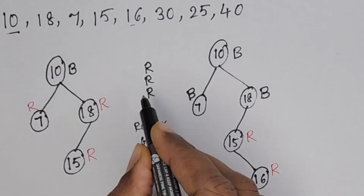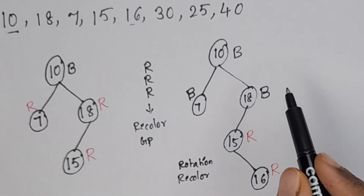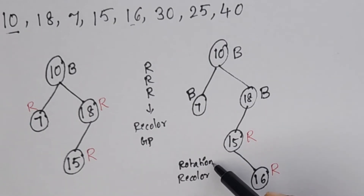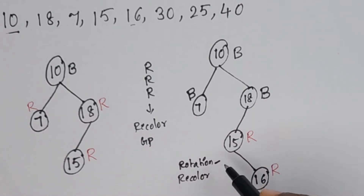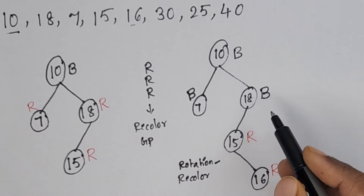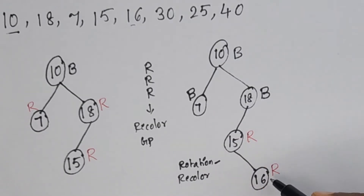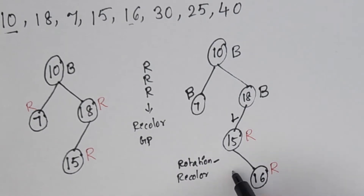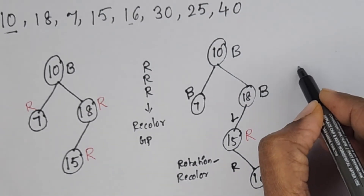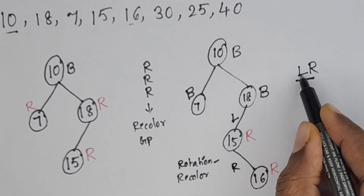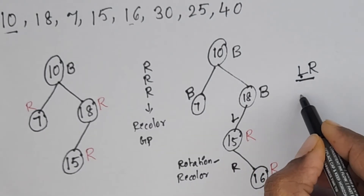From the new node to its grandparent, we check the direction: from the grandparent, the path goes left then right, so we perform an L-R rotation. First, perform the L rotation, then the R rotation.